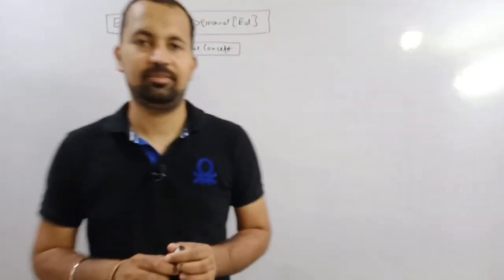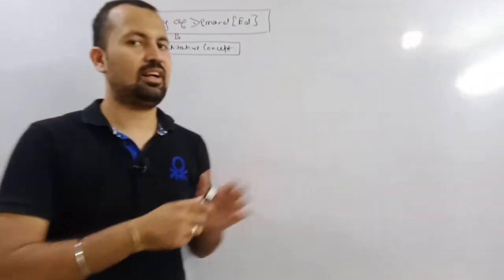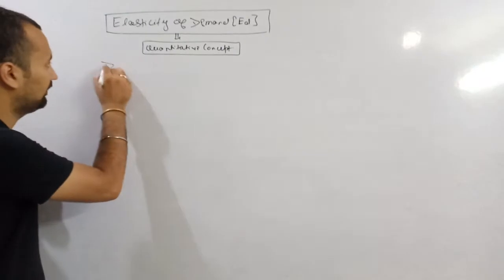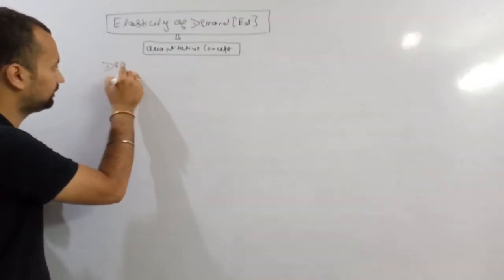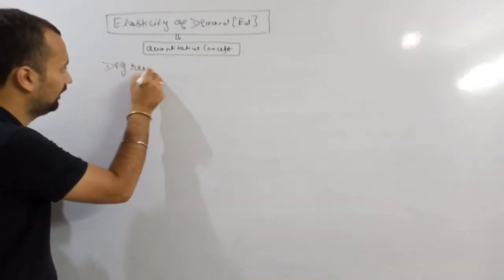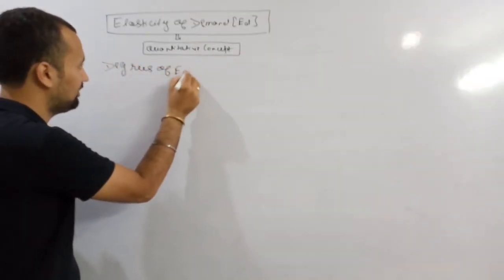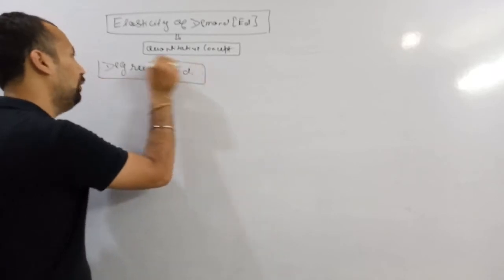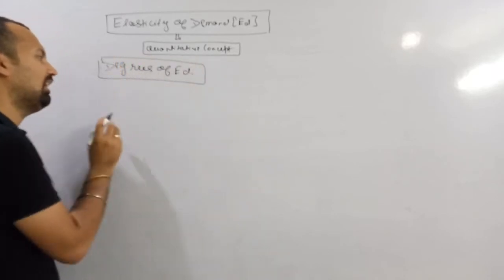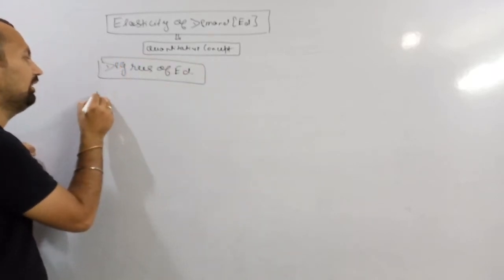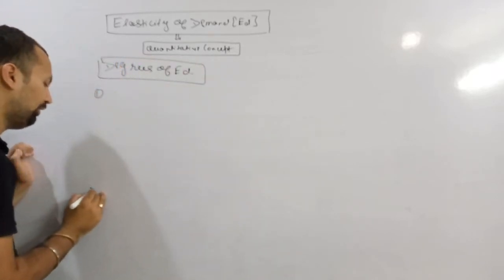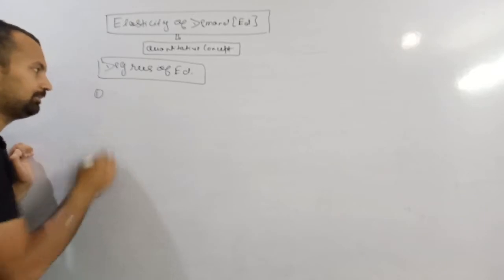Now we are starting with the degrees of elasticity of demand, also called types of elasticity of demand. It can be classified into five parts.